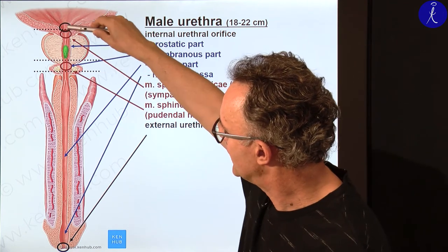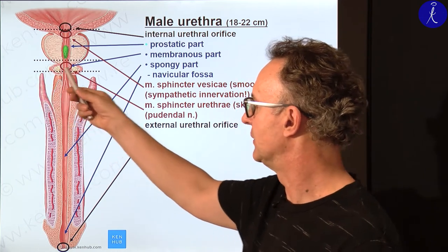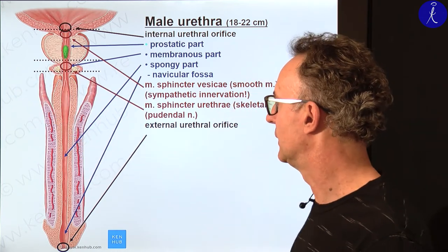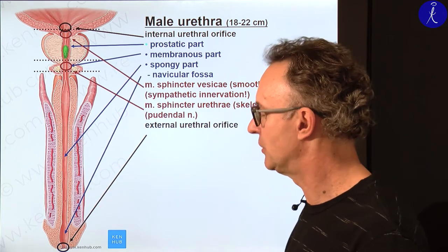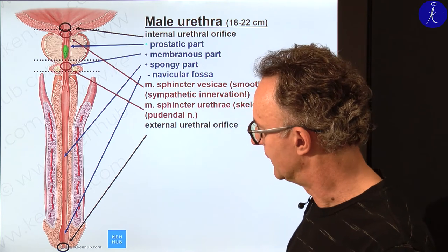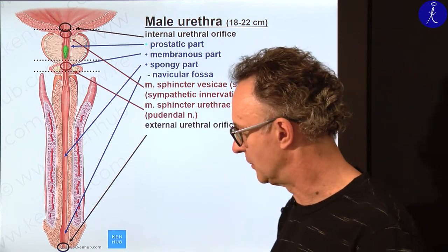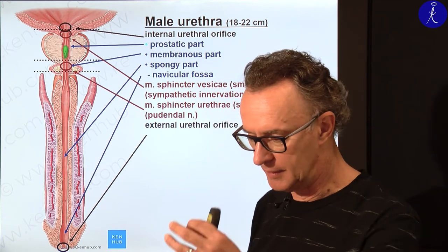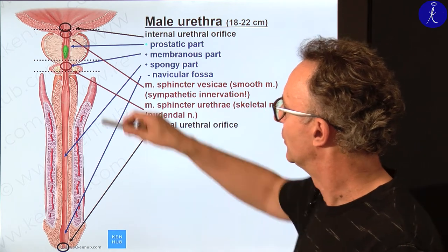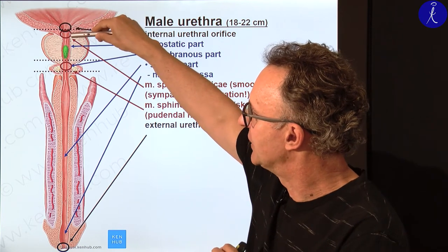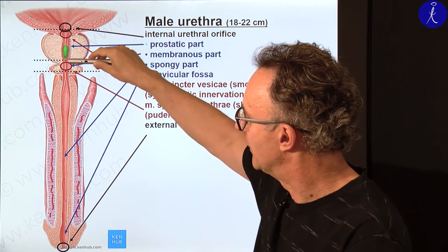The first part of the urethra is the prostatic part. The second part, where the external sphincter is, is the membranous part — where it passes the perineal membrane or urogenital diaphragm. Then the urethra enters the corpus spongiosum as the spongy part, which is the longest part. At the end we have a dilated region called the navicular fossa, after its boat-like shape, ending at the external urethral orifice at the tip of the glans.